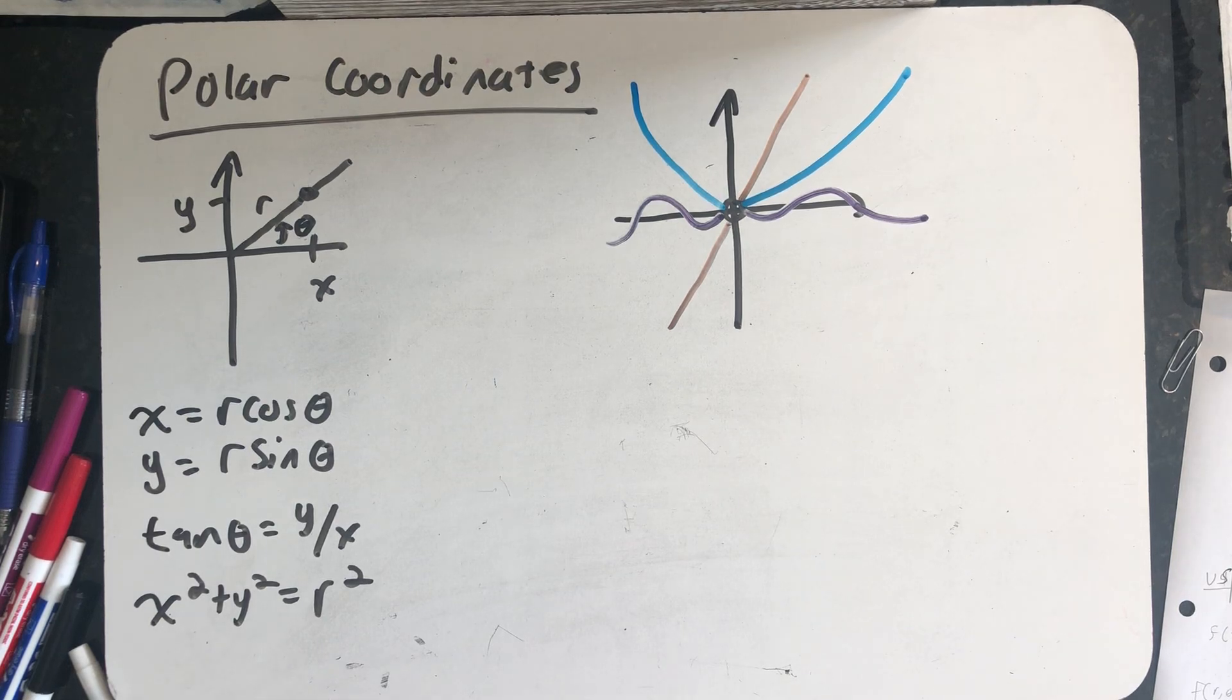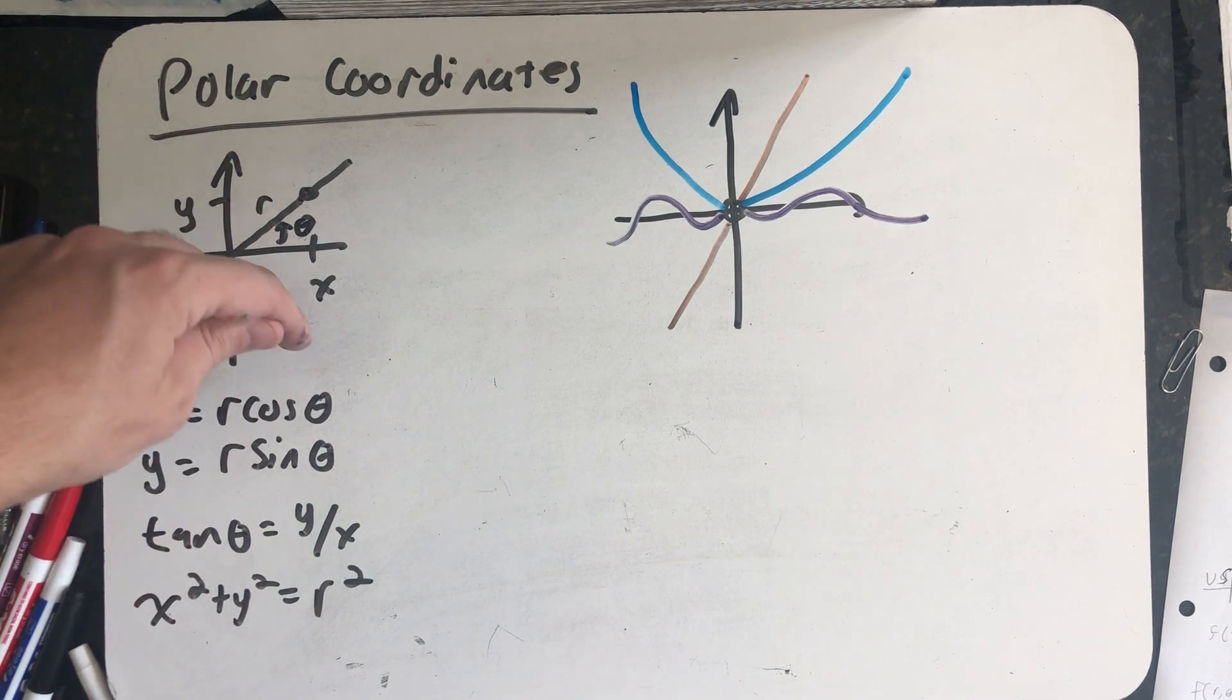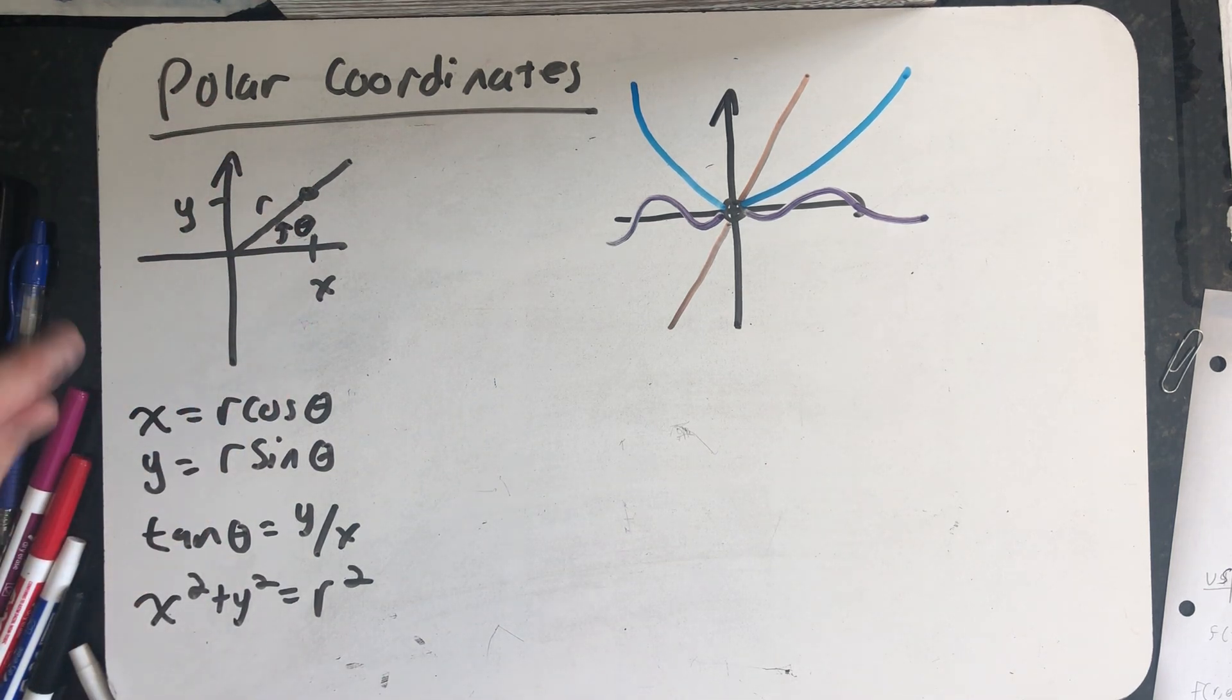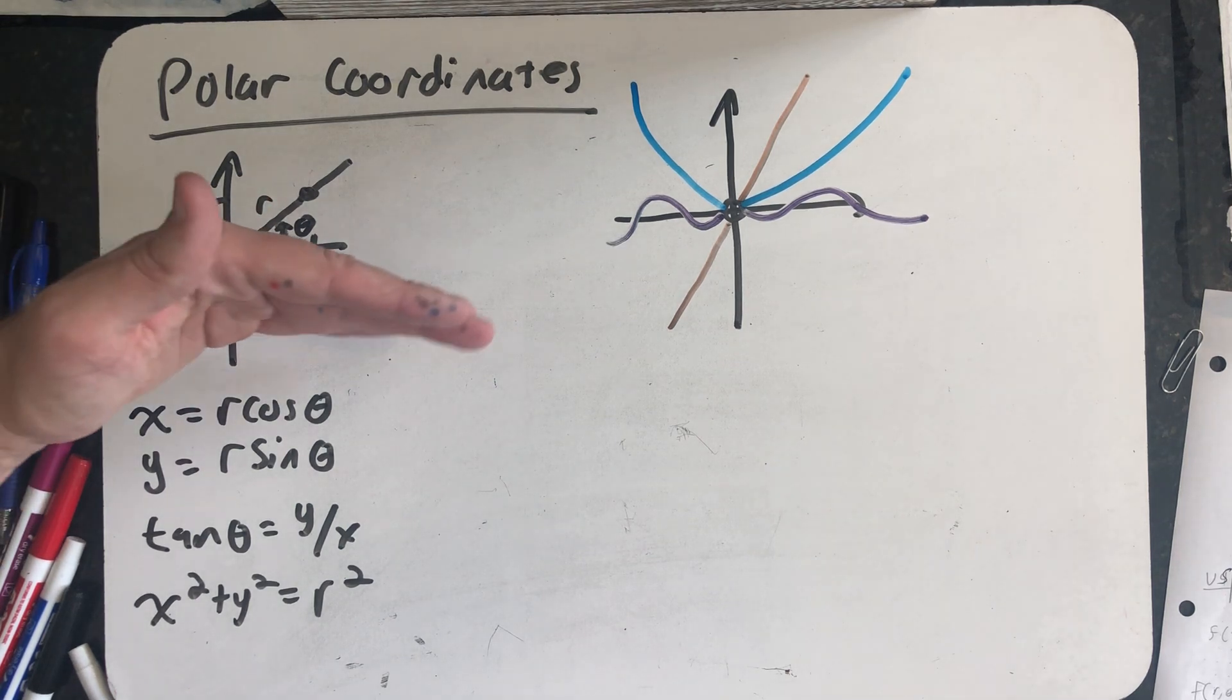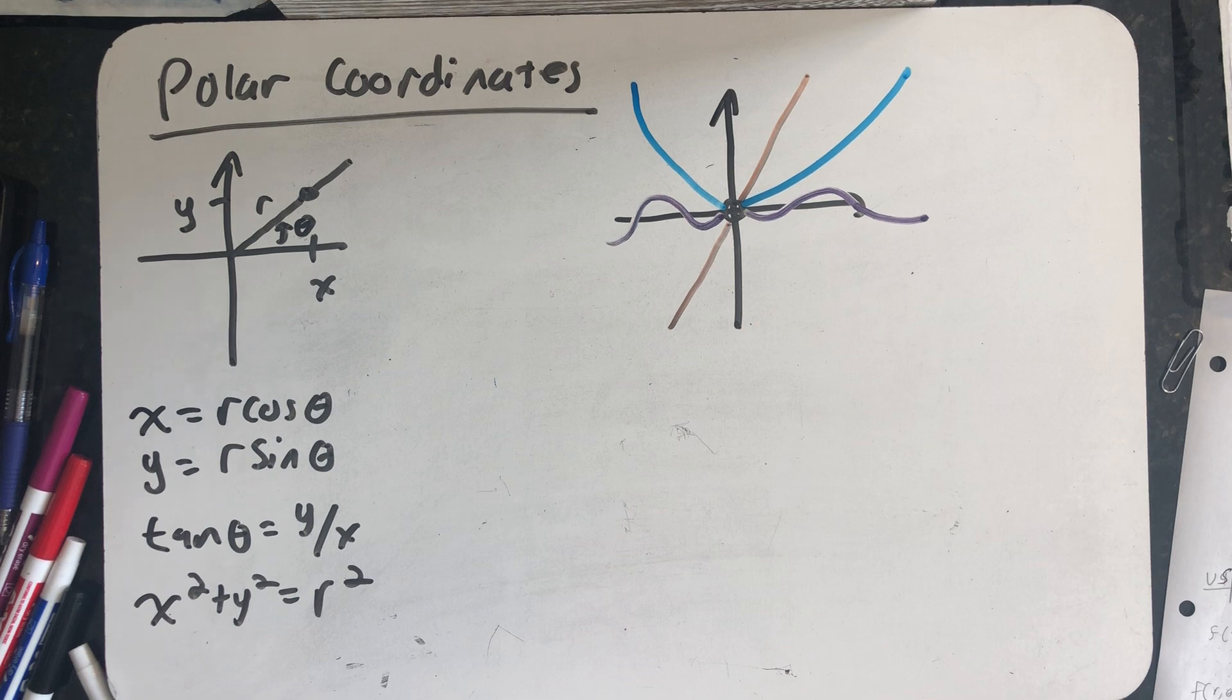I want to talk about polar coordinates and how we can use them to evaluate limits of functions of two variables. In polar coordinates, instead of thinking of an ordered pair (x, y) to represent a point, I think about every point as a directed distance r from the origin or pole, and as a directed angle theta rotated from the positive x-axis.